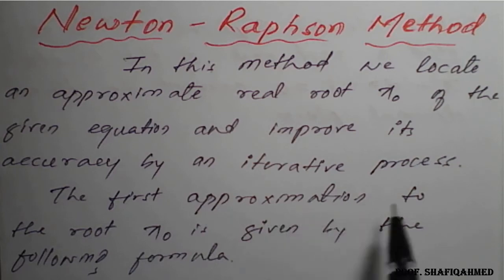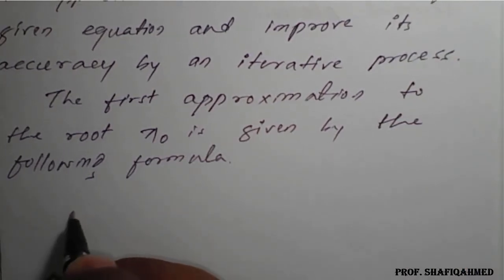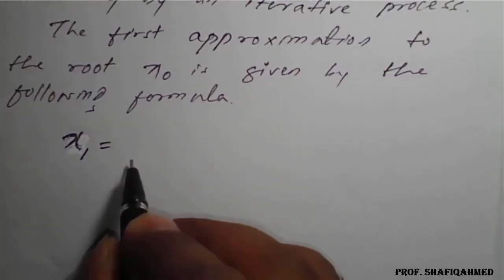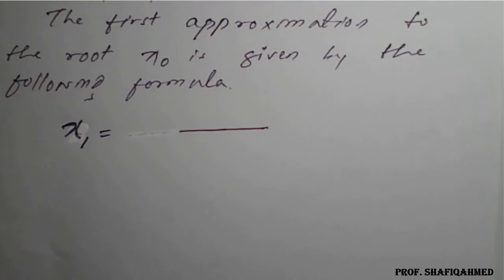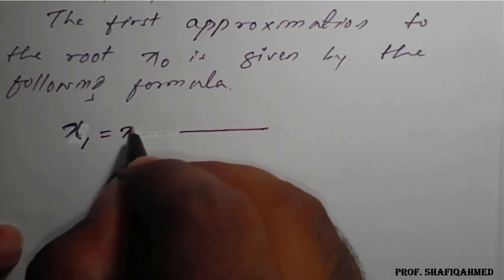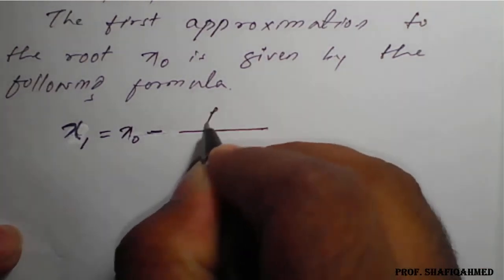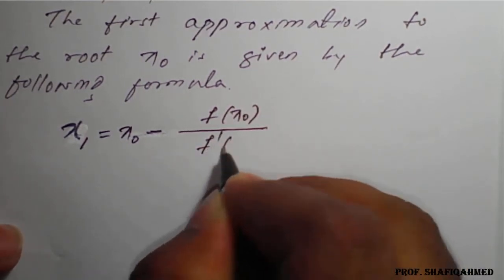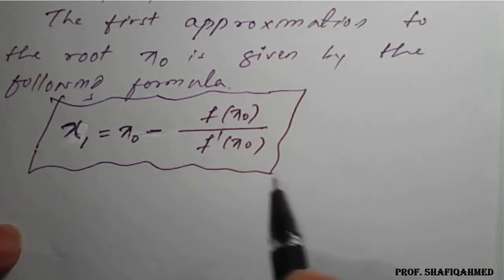Here, the first approximation to the root x₀ is given by the following formula: x₁ = x₀ - f(x₀)/f'(x₀). This is the first approximation formula to get x₁.